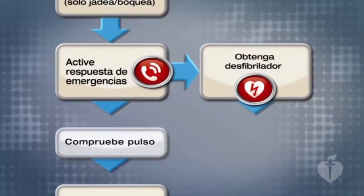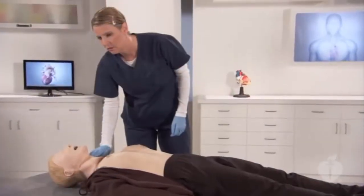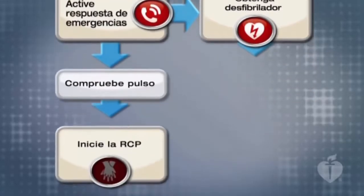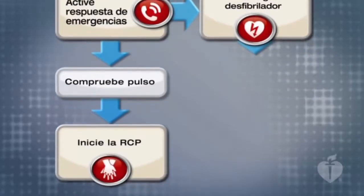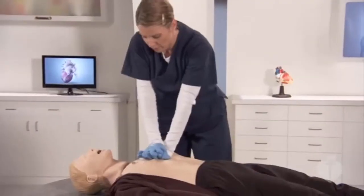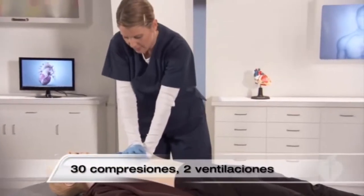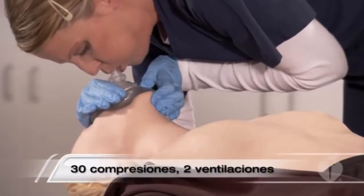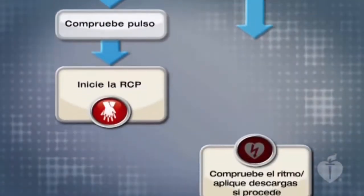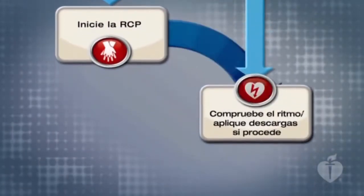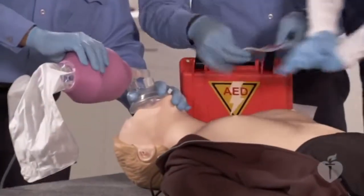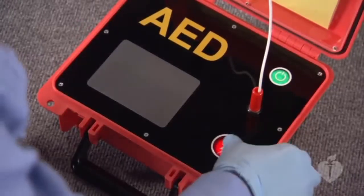Paso 3: Circulación. Compruebe el pulso carotídeo por no más de 10 segundos. Si no detecta pulso tras 10 segundos, inicie la RCP. Realice inmediatamente ciclos de 30 compresiones torácicas seguidas de dos ventilaciones. Paso 4: Desfibrilación. Conecte un DEA o desfibrilador y si está indicado, administre una descarga.